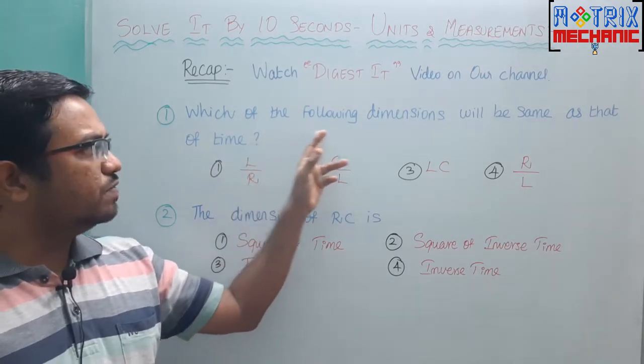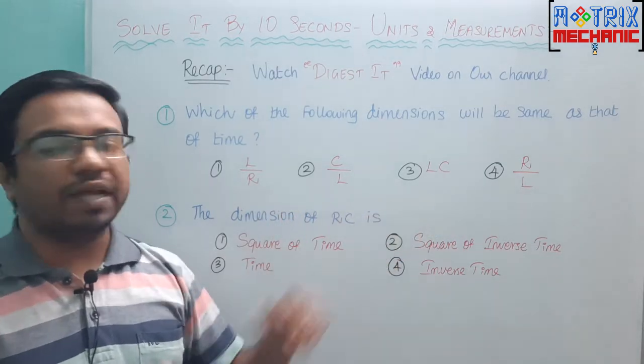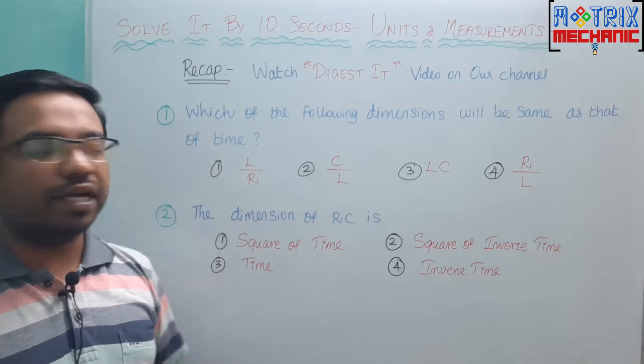See this one. Which of the following dimensions will be same as that of time? Here we need to find the quantity with time dimension. Now you will know what option has the time quantity.